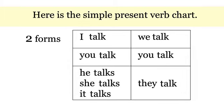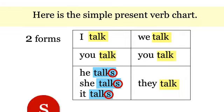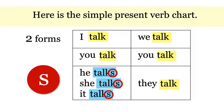Notice there are two forms: talk and talks. And notice there's an S on the end of the third person singular. There's always an S on the third person singular.